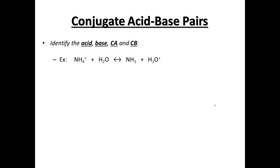A little background before we get started: what we're going to know is our acid-base, conjugate acid, conjugate base pairs. If we were to have a reaction — NH4+ plus water produces NH3 and H3O+ — notice this is a reversible reaction; it can go either way. If we look at NH4 and NH3, NH4 is losing a hydrogen to become NH3.